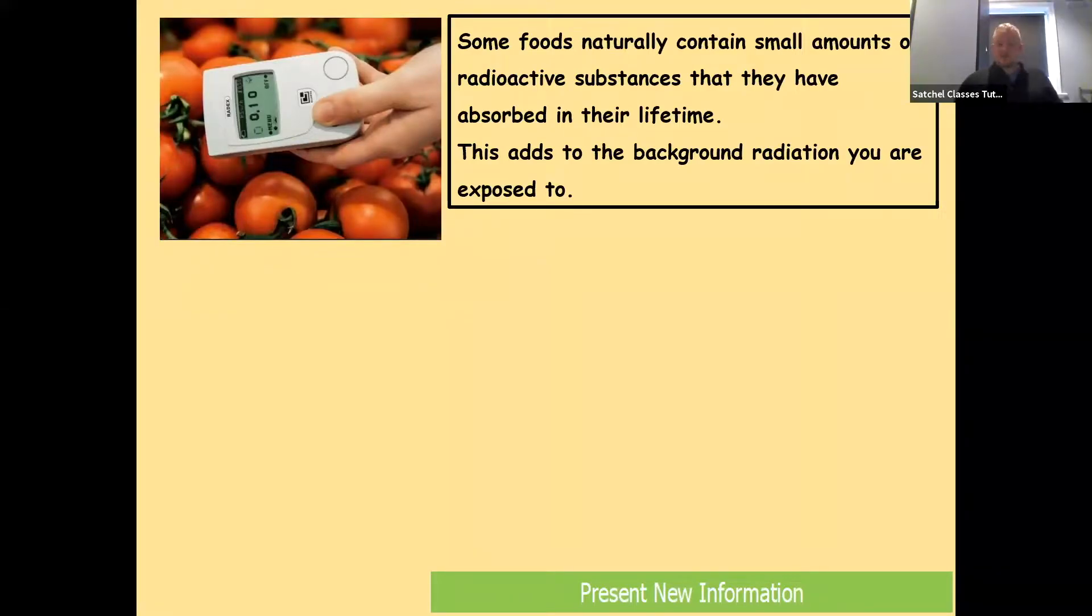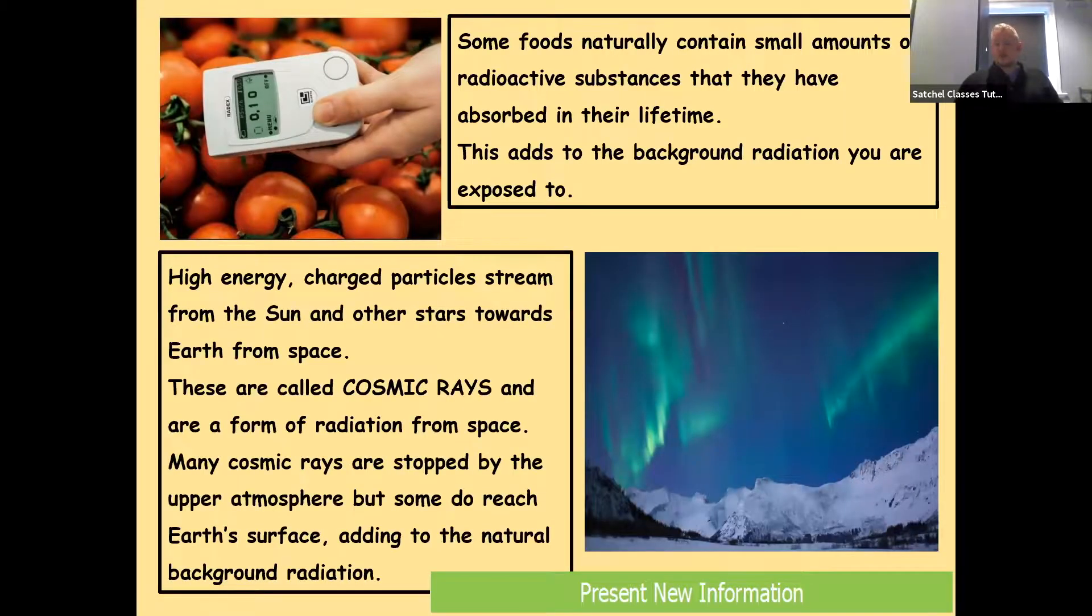High energy charged particles stream from the Sun and other stars towards Earth from space. These are called cosmic rays and are a form of radiation from space. Many cosmic rays are stopped by the upper atmosphere, but some do reach Earth's surface, adding to the natural background radiation. The picture you see there is the aurora borealis, the northern lights, a display that's put on when charged particles from the solar winds of the Sun strike Earth's atmosphere, causing an emission of light at particular wavelengths and frequencies.